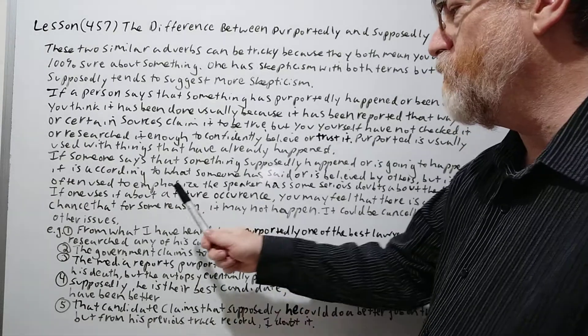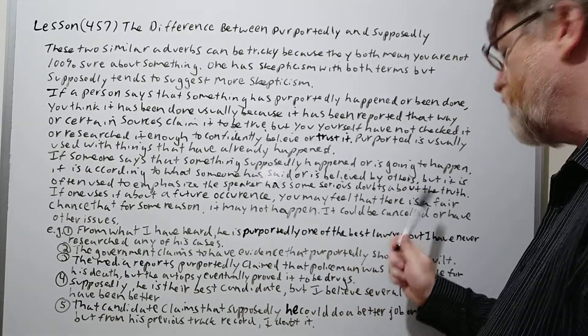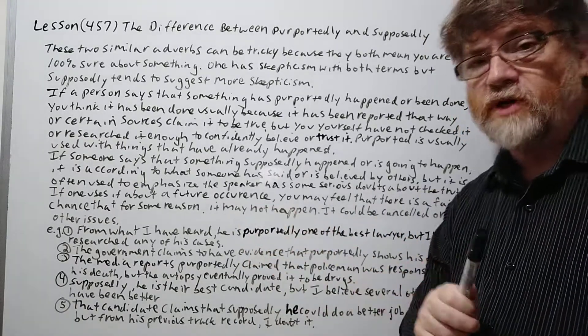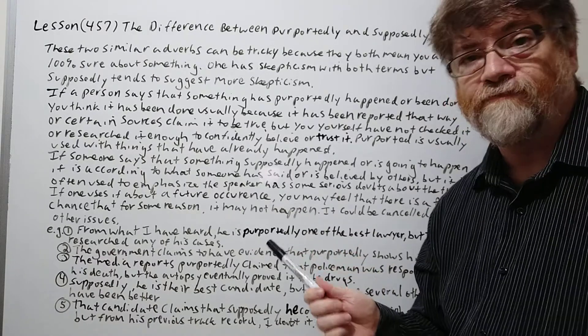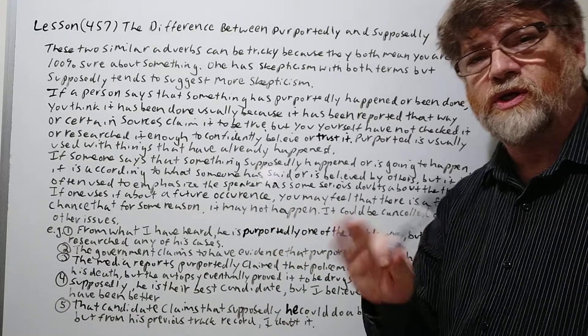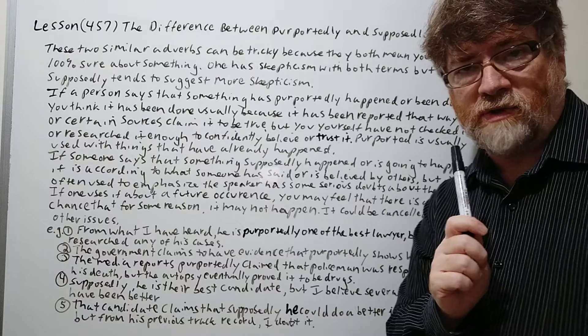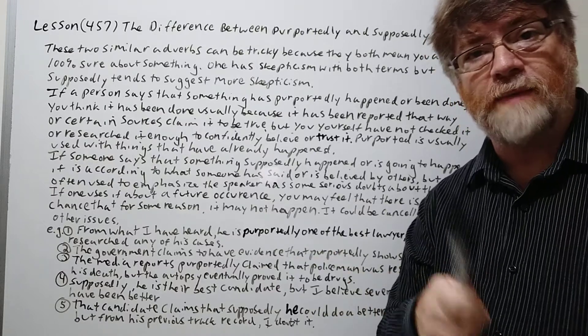Okay. So if one uses it about a future occurrence, you may feel that there is a fair chance that for some reason it may not happen. You know, it could be canceled or have other issues. So you have more doubts about it. It could happen, but you feel that there's a fair or kind of a stronger chance that it may not happen at all.